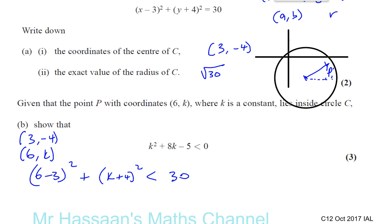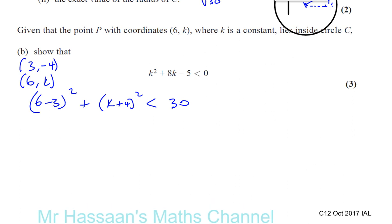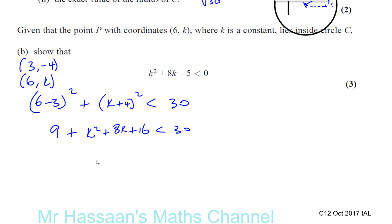So we've formed an inequality from the information given. We have (6 − 3)² = 3² = 9, plus K² + 8K + 16, and that's less than 30. This gives us a quadratic inequality. Bringing everything to one side: K² + 8K + 9 + 16 − 30 < 0, which is K² + 8K − 5 < 0. We've shown that.